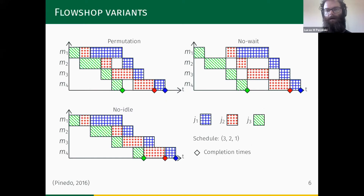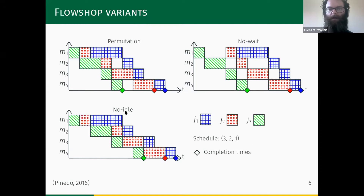There are many variants of this problem. The most common is the permutation flow shop. Another type is the no-wait flow shop, which imposes no time gaps between each job operation so jobs are executed continuously. Another variant is the no-idle flow shop, where there is no idle time on machines — once a machine starts, it processes jobs without stopping.